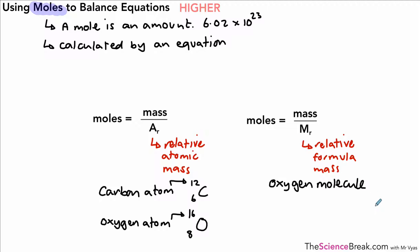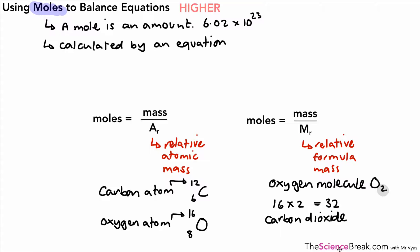If you're looking at a molecule like oxygen (O₂), you need the relative formula mass, which is 2 × 16 = 32. For carbon dioxide (CO₂), you use relative formula mass too: 12 plus 2 × 16 gives 44. So the relative formula mass of O₂ is 32 and of CO₂ is 44 — that's why we have two different equations for calculating moles.